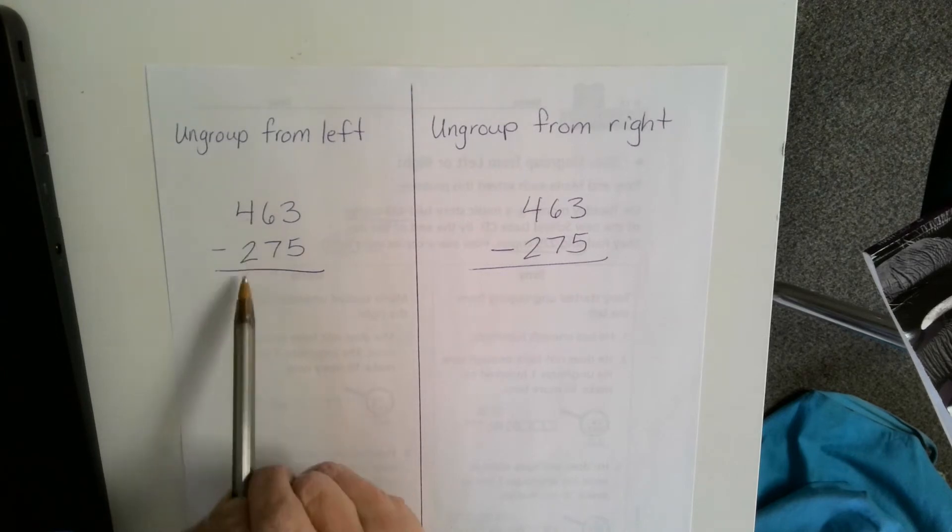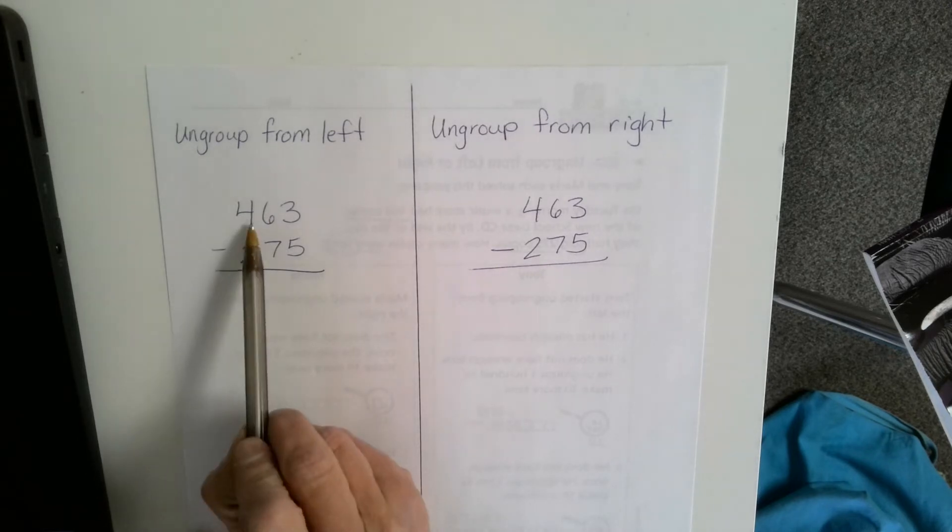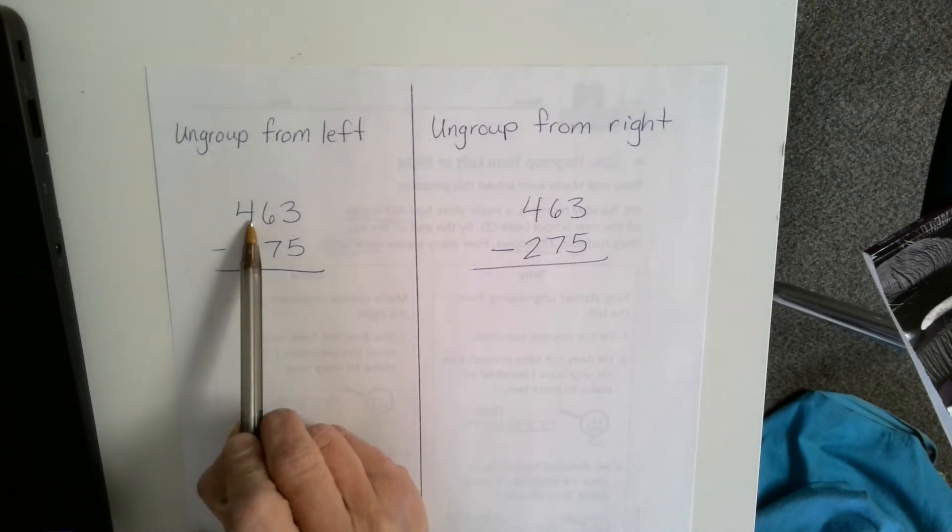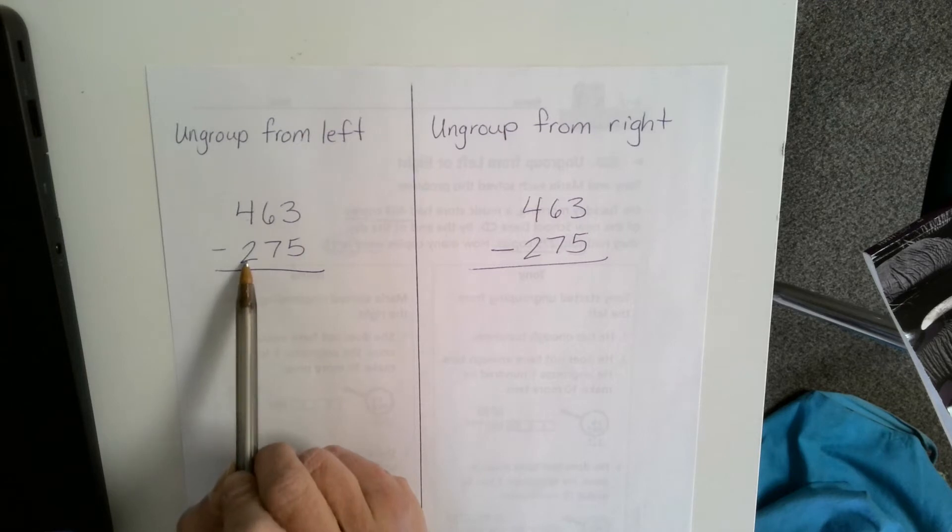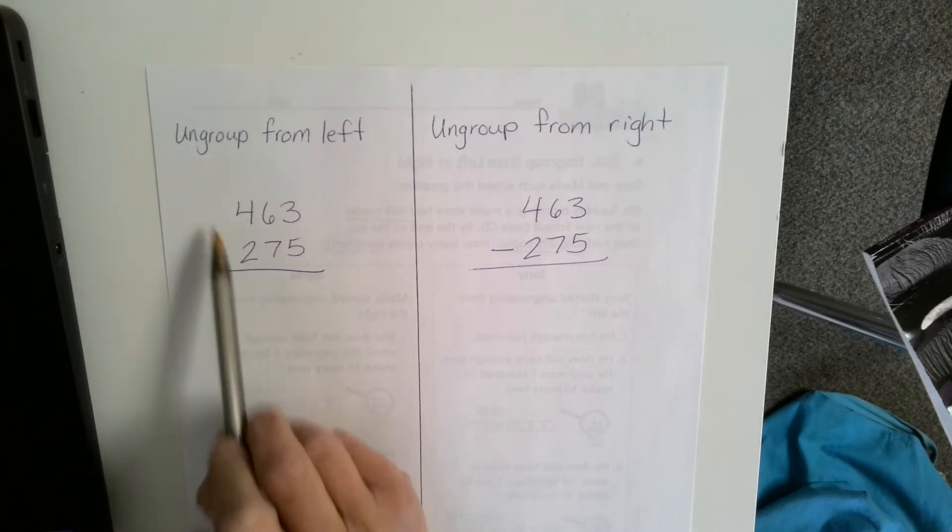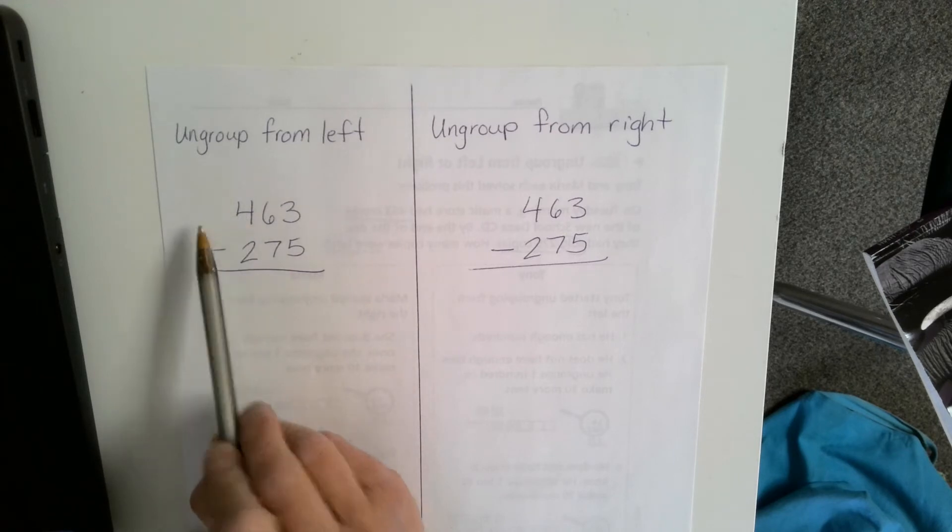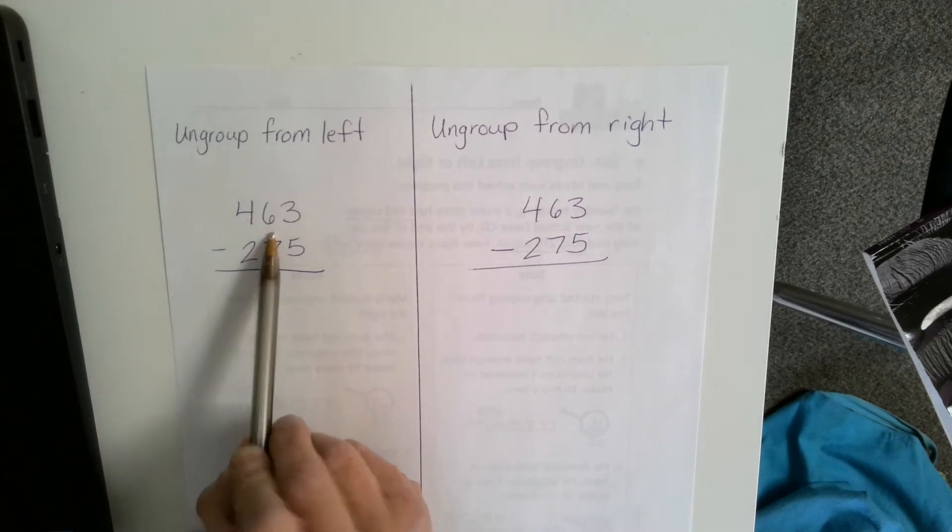When I look at the hundreds, do I need to make a new group? When we think about making new groups, we have to see if we have a larger or greater number on the top than we do below it. I could do 4 minus 2, so do I need to make a new group from the thousands? There are no thousands, so no, I can't.